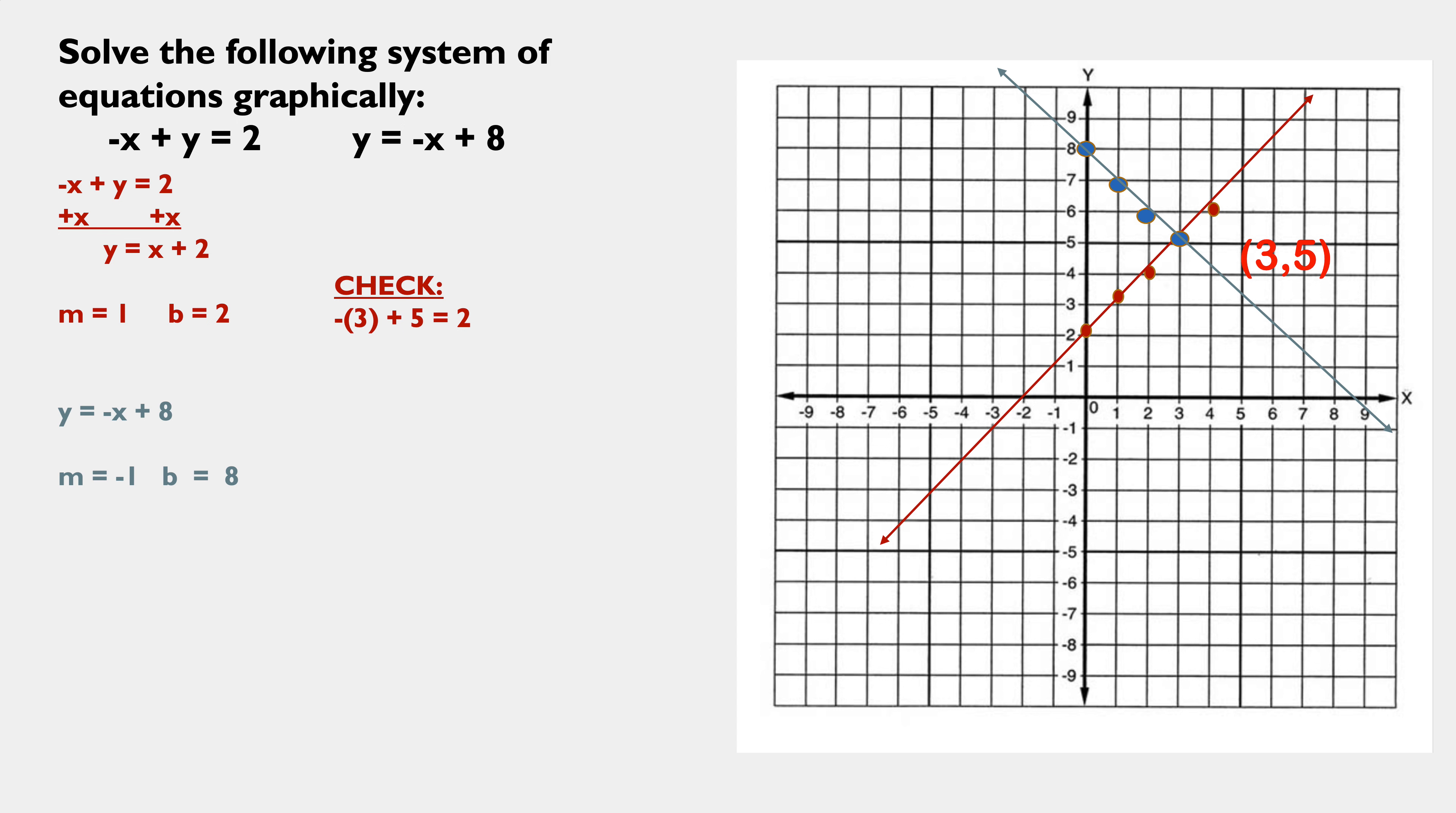Plugging in a 3 to the first equation, negative 3 plus 5 is 2. We're looking good. 2 is 2. That works. And in the second or blue equation, y equals negative x plus 8. 5 is negative 3 plus 8. Yeah, that works. 5 is 5. So, I have it correct.